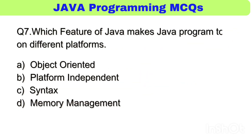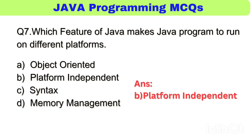Question number 7. Which feature of Java makes Java programs run on different platforms? The right answer, option B: platform independent.